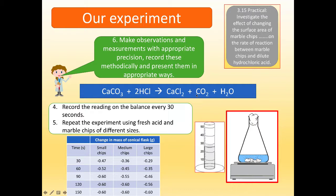Next. Having done the experiment, we need to be able to make observations and measurements with appropriate precision, record these methodically, and present them in appropriate ways. So here's our results table. Left-hand column here, we've got time from 30 to 150 seconds, and here we've got change in mass of conical flask. We've got change in mass for small chips, medium chips, and large chips. Why is it negative? Well, because we're losing mass. We are losing mass because the carbon dioxide has been given off. This is why our mass is negative.